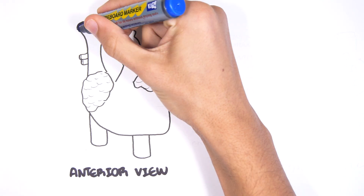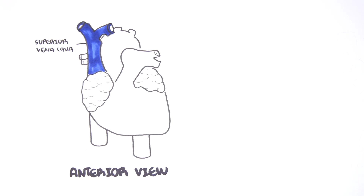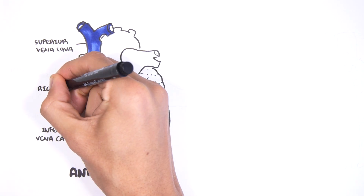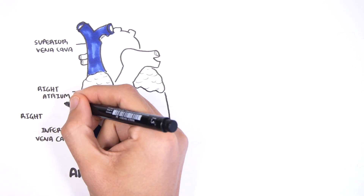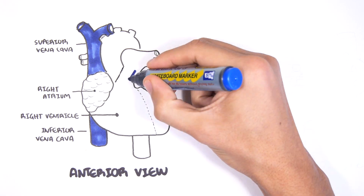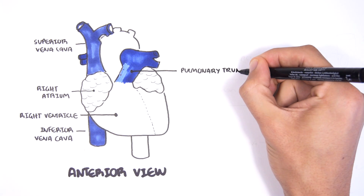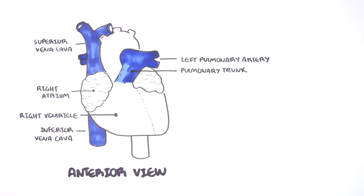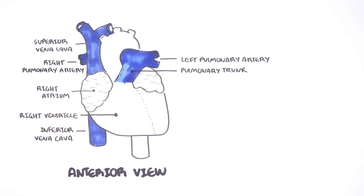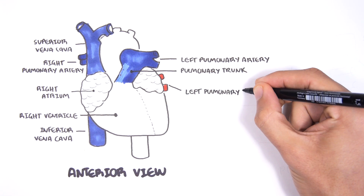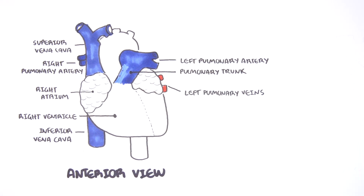Here we're looking at the anterior view of the heart, the superficial anatomy. The superior vena cava and the inferior vena cava bring deoxygenated blood to the right side of the heart, to the right atrium, then to the right ventricle. The right ventricle will pump this deoxygenated blood up the pulmonary trunk, then into the left pulmonary artery and right pulmonary artery. The left and right pulmonary arteries will bring this blood to the lungs, and then the blood from the lungs will return to the heart via the left pulmonary vein and the right pulmonary vein.